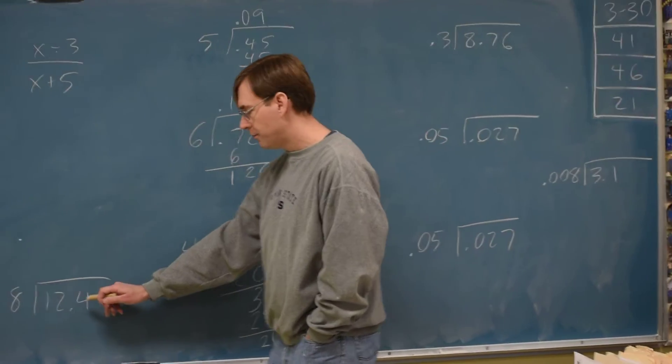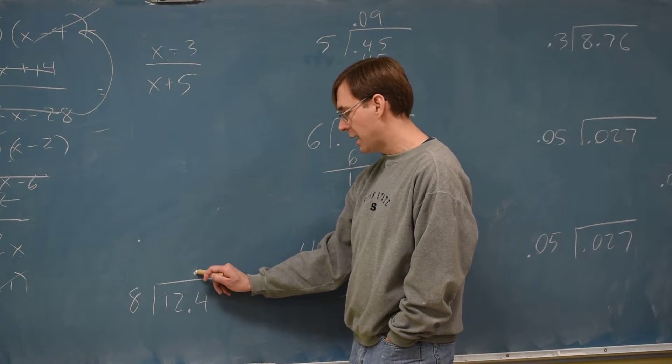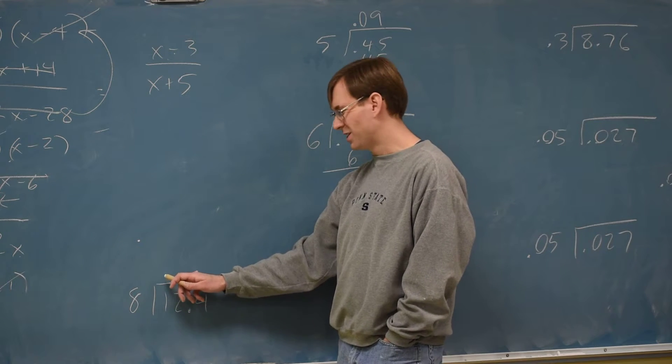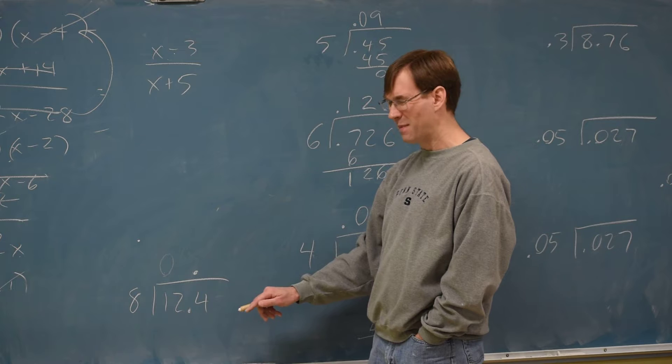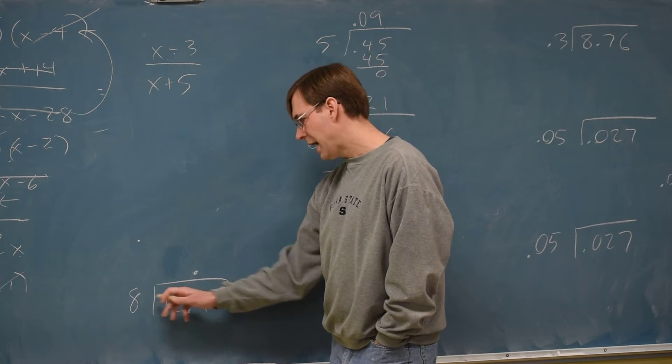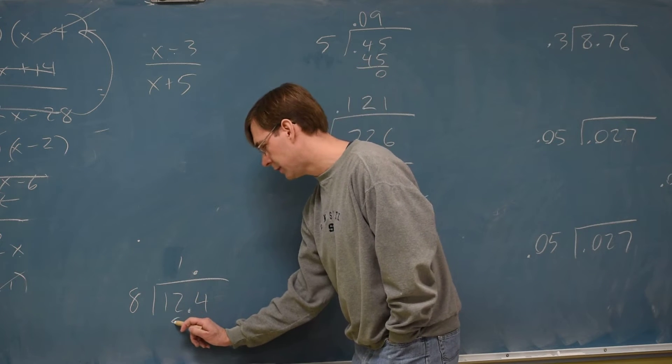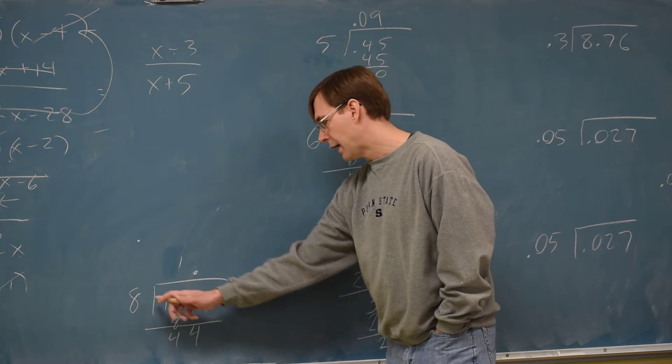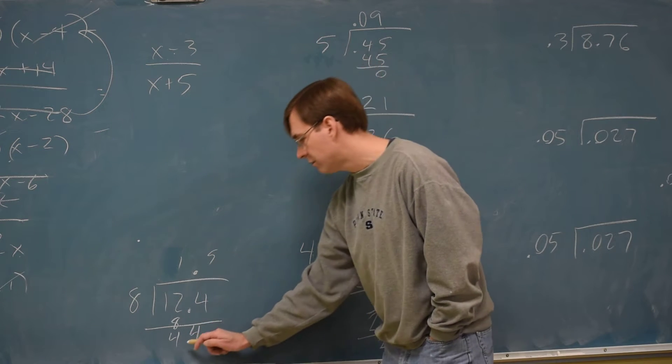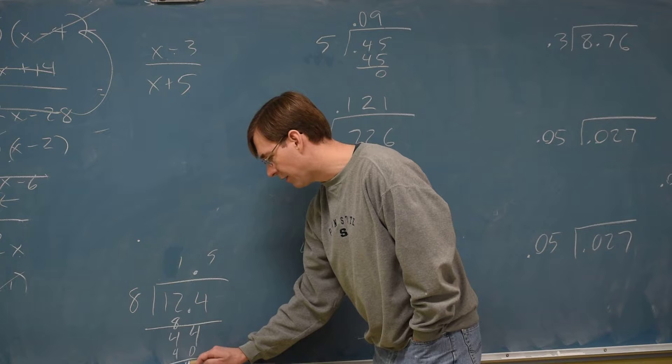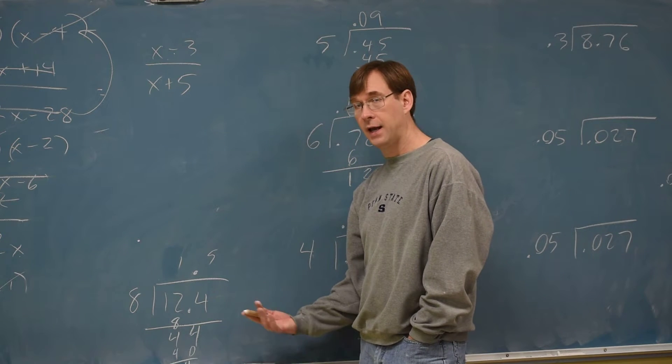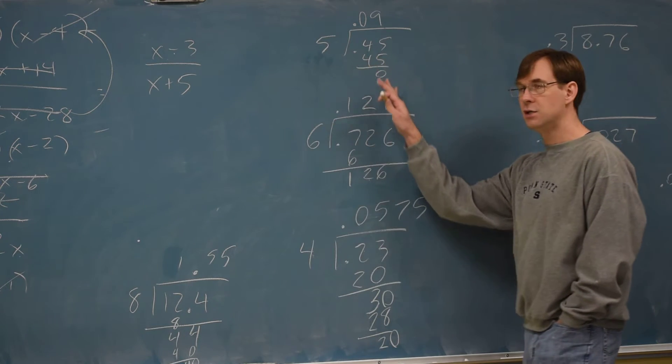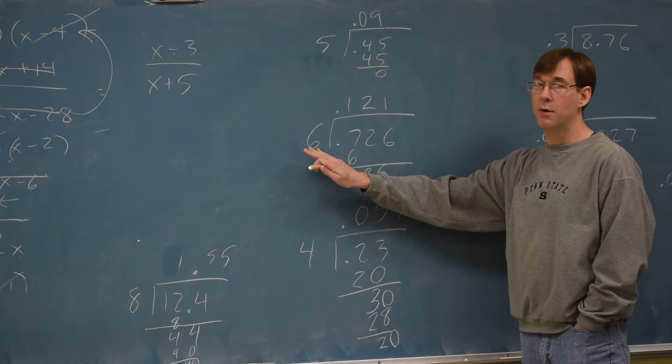One more of that type. Again we start off by the decimal point goes straight up. Eight into one won't go. If you're in the whole number positions you don't need to write that zero at the beginning. Eight into twelve is one, gets me an eighth. Gets me a forty-four. Eight into forty-four is five, gets me forty. Subtract to get four. If you're not done, add a zero. Eight into forty is perfect. Then there's a five. And that's the easier part of the lesson where the divisor already was a whole number.